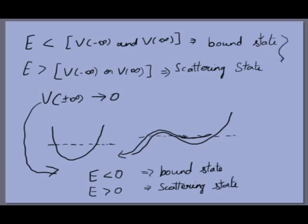Keep in mind, the general rules — energy less than V(±∞) for bound, greater than either for scattering — are the actual rules. The simplified energy-vs-zero rule applies only when V at infinity and minus infinity goes to zero. This was not true for either the infinite square well or the harmonic oscillator, which are artificial potentials that do not exist in real life. In real life, the potential will go to zero as x goes to ±∞, so if total energy is less than zero we have a bound state, and greater than zero gives a scattering state. We have seen the infinite square well, harmonic oscillator, and the free particle so far.